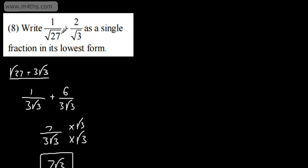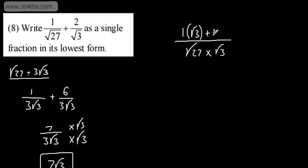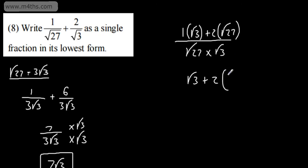Now combining the fractions using a second method: if we had a common denominator, that would be the root of 27 times by the root of 3. This is going to give me the root of 81, and the root of 81 is 9, which is a rational number. If I did that, I'd need to multiply the 1 by the root of 3, and then the 2 by the root of 27. So in the numerator, I'm going to write that this is going to be root 3 plus 2 lots of — instead of the root of 27 — 3 root 3, and I'm going to write that this is going to be over the root of 81.